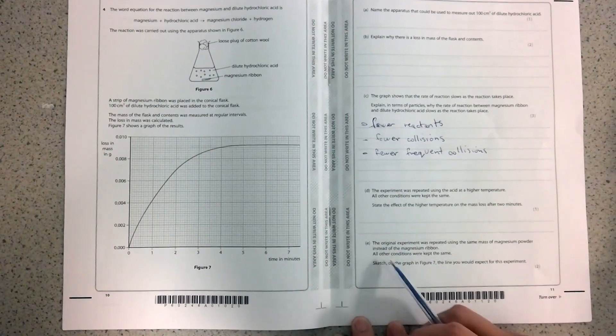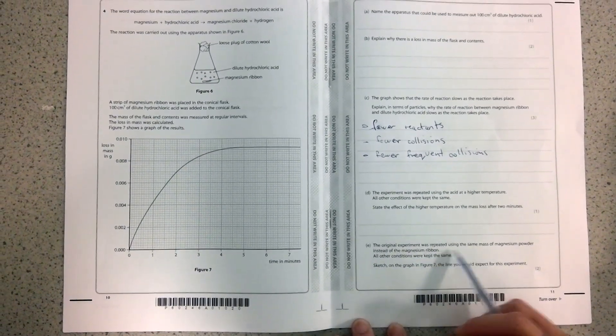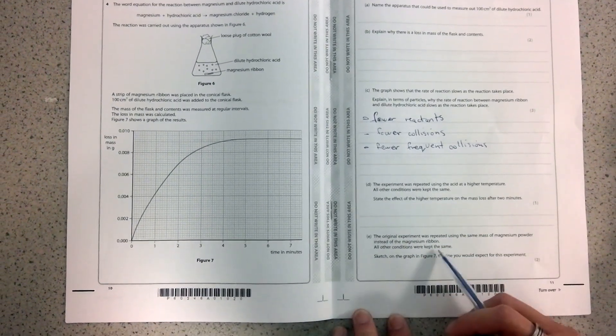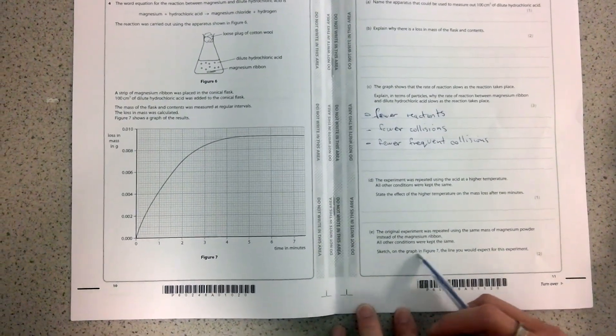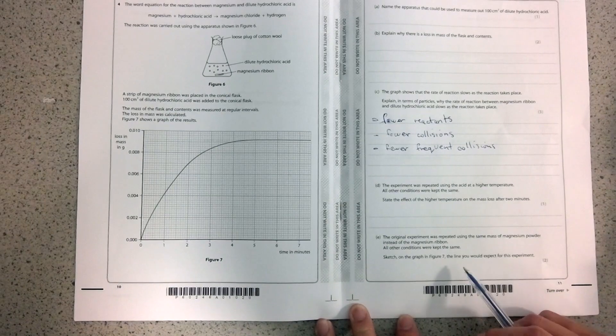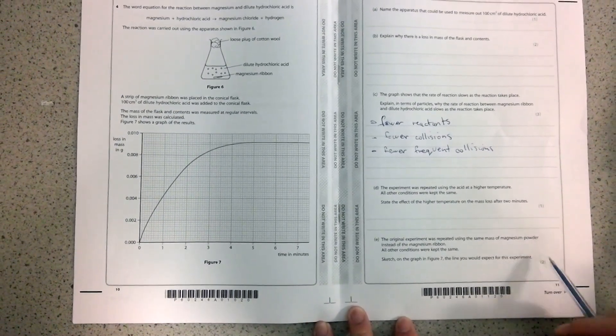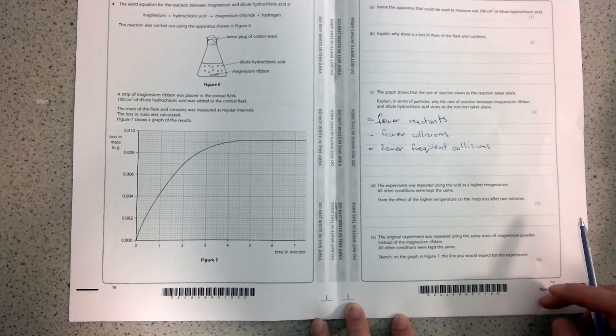For the final question, it's asking you, the original experiment was repeated using the same mass of magnesium powder instead of the magnesium ribbon. All of the conditions were kept the same. It's asking you to sketch on the graph in figure seven, so this diagram here, the line you'd expect for this experiment. So it's worth two marks.